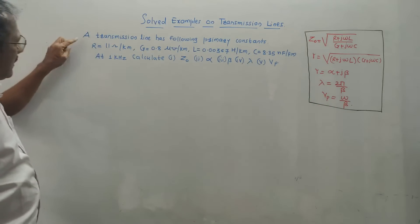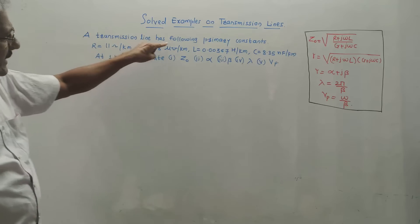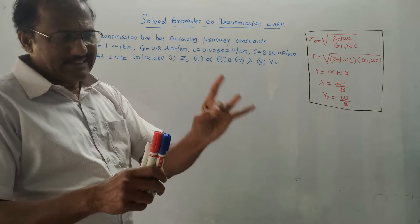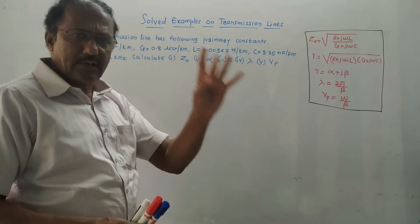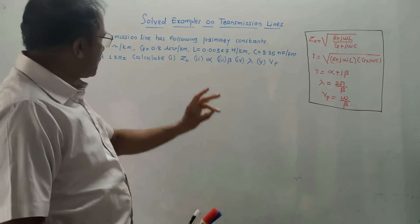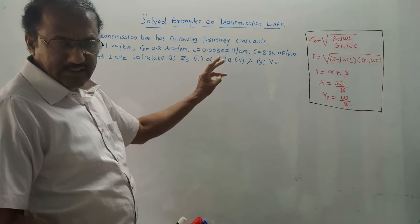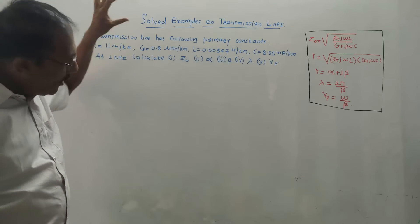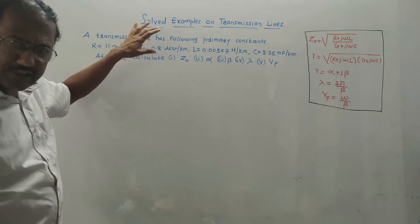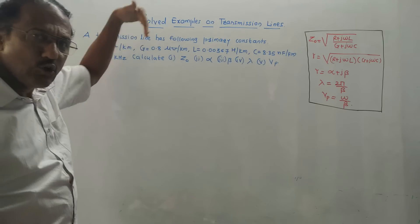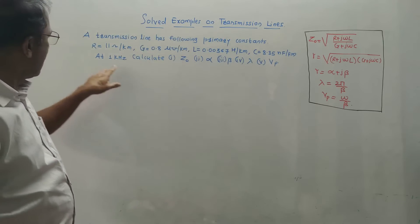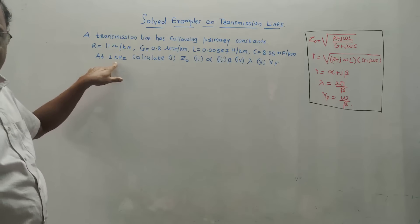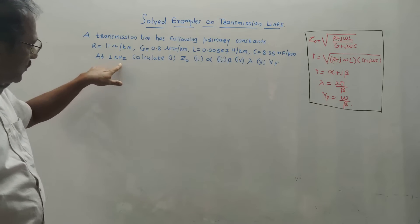Now consider one numerical. A transmission line has the following primary constants. We know that R, L, C, G — resistor, inductor, capacitor, and conductance — are the primary constants. All primary constants are expressed in terms of per kilometer. At 1 kHz, where f is given as 1 kHz, calculate: Z0 (characteristic impedance), alpha (attenuation constant), beta (phase shift), lambda (wavelength), and Vp (velocity of propagation).